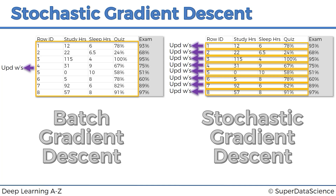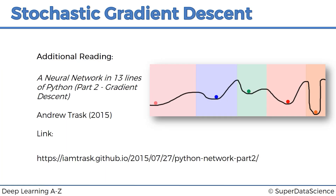If you'd like to learn more about gradient descent, there's a great article you can check out. It's called 'A Neural Network in 13 Lines of Python Part 2: Gradient Descent' by Andrew Trask. The link is below — it's on GitHub, a 2015 article. Very well written in simple terms, with interesting thoughts on how to apply gradient descent, its advantages and disadvantages, and some very cool tips, tricks, and hacks. Very easy read, so definitely check that out.